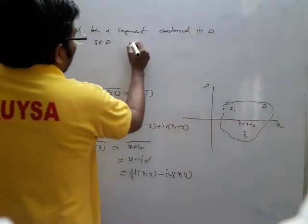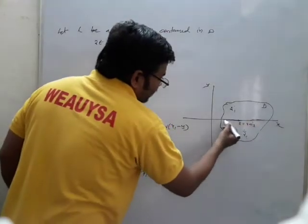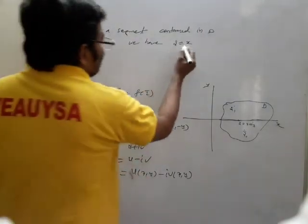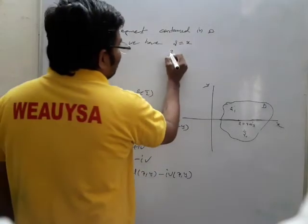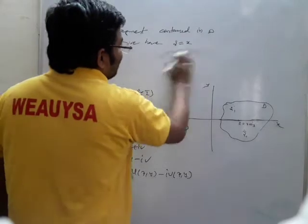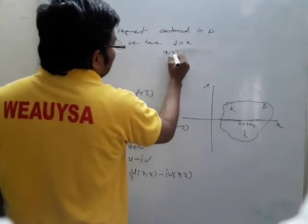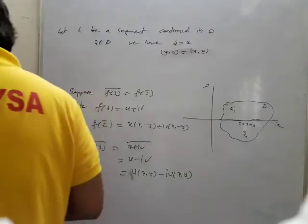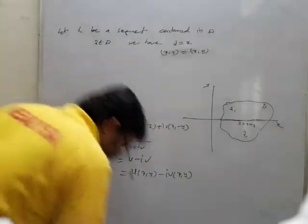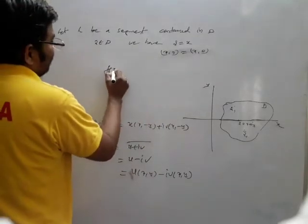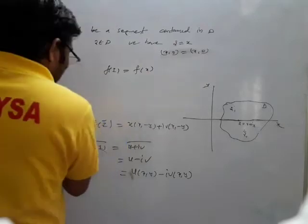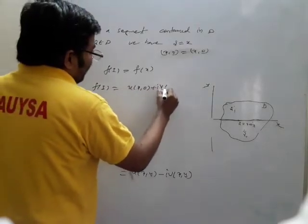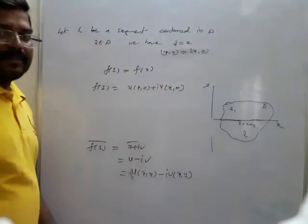All values contained in the line segment are real. Since z = x + iy on the segment, we have z = (x, 0), meaning only the real part is present. Therefore f(z) = f(x) = u(x, 0) + iv(x, 0), where only the real part remains and the imaginary part will not be there.